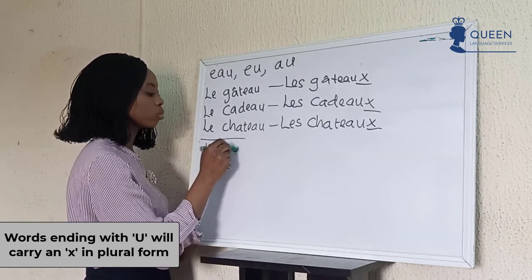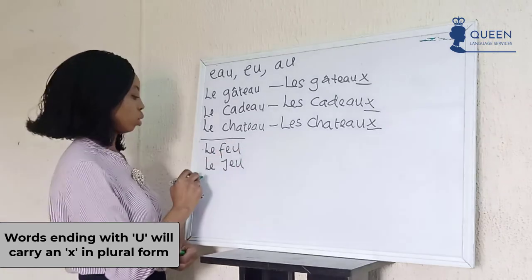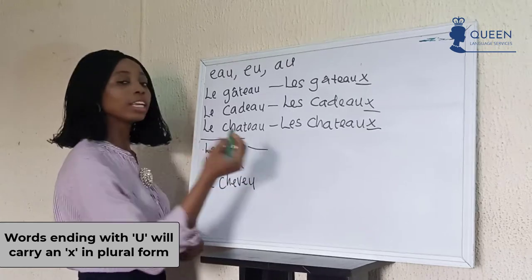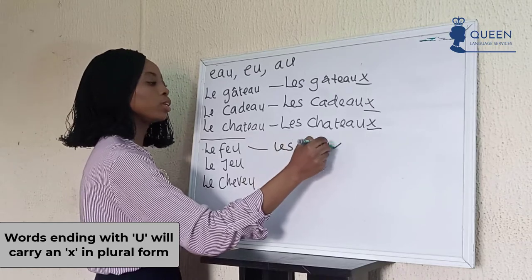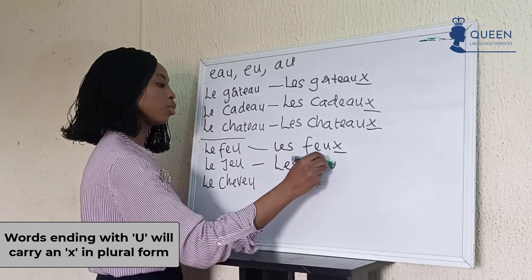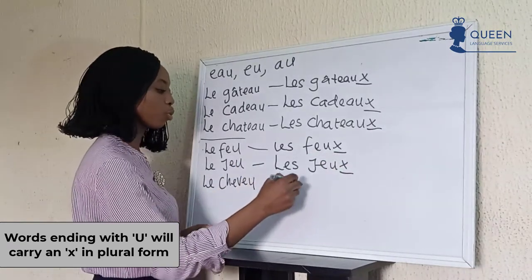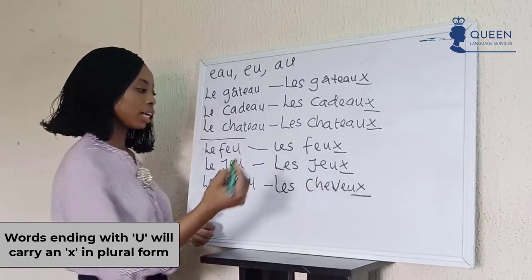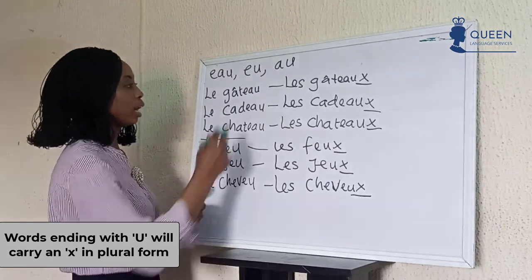For the -eu ending, we have examples such as 'le feu,' 'le jeu,' 'le cheveu.' In the plural form we have them with an addition of -x at the end: 'les feux,' 'les jeux,' 'les cheveux.'